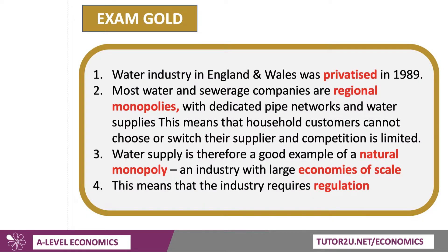The water sector in England and Wales was privatised in 1989 — well over 30 years ago. Scottish Water, by the way, remains in state hands. Most water and sewage companies are regional monopolies, meaning they have a regional dedicated pipe network, water supplies to households and businesses, and sewage treatment plants.